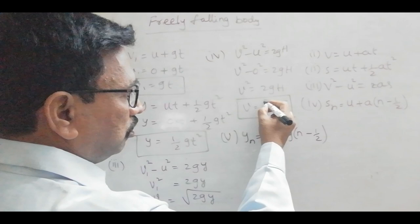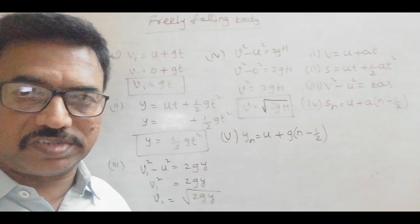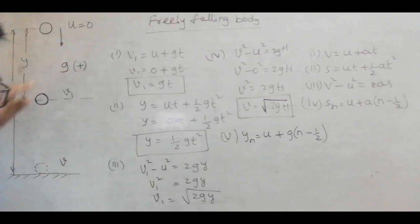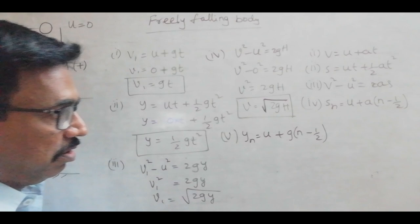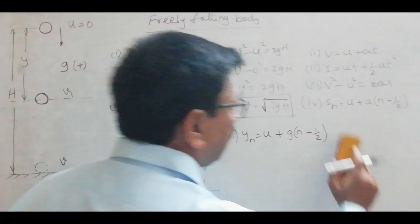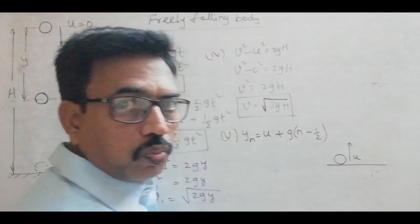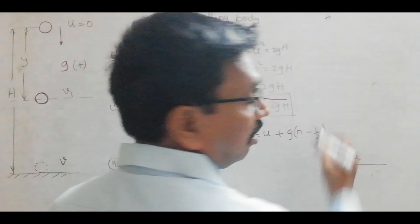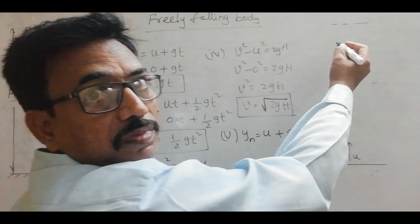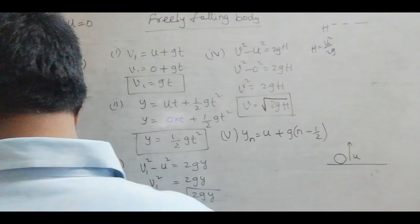These are the relations for a freely falling body, and one more expression is the time of descent. In order to find the time of descent, first we have to understand the motion of a body projected vertically upwards. Suppose we are projecting a body vertically upwards from the ground level with some velocity U; it will reach some maximum height H, and we have derived the expression for the maximum height: H equal to U square by 2G. So the maximum height depends on the initial velocity of projection.